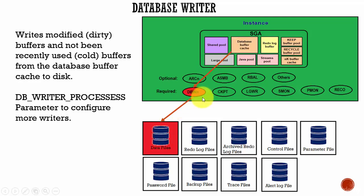Why does it write both the dirty buffers and the cold buffers into the data files? It writes so that the other user processes can find clean buffers, so that they can write the new blocks into the cache. Whenever the user starts writing into the database, the buffers get dirty. As the buffers get dirty, the number of free buffers reduces. The user processes that must read the new blocks from the disk into the cache are not able to find free buffers. That is why the database writer manages in such a way that the user processes can always find free buffers.